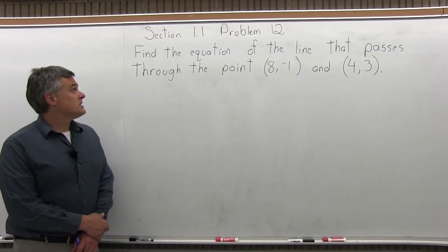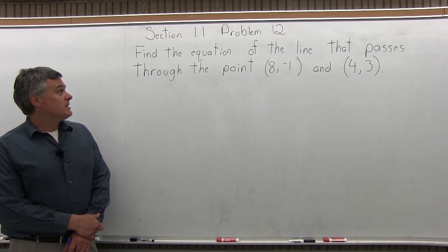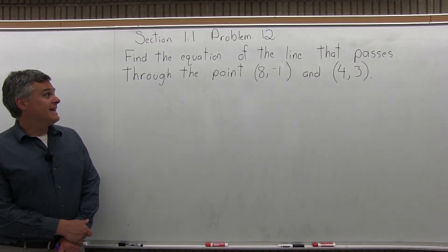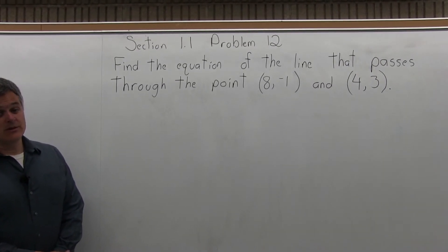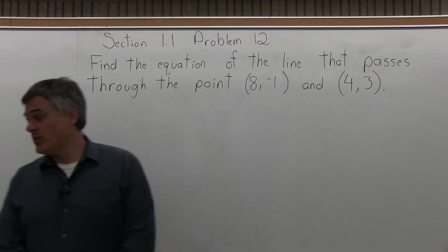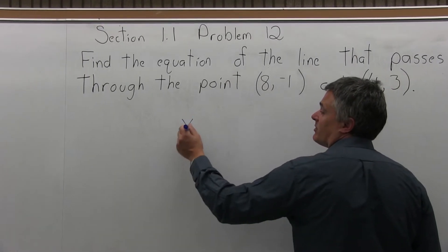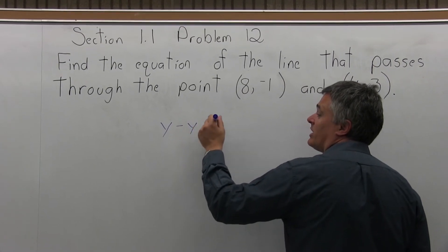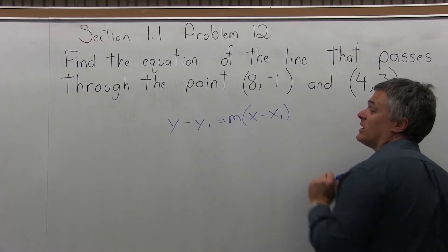This is problem number 12 from Section 1.1 of the homework. Find the equation of the line that passes through the points (8, -1) and (4, 3). When we want to find the equation of a line, we start with the formula y minus y1 equals m times x minus x1.